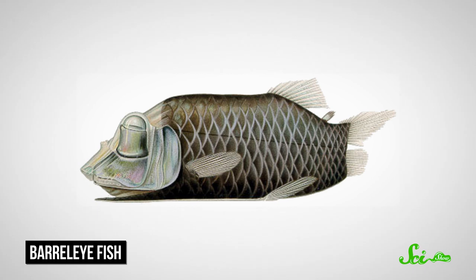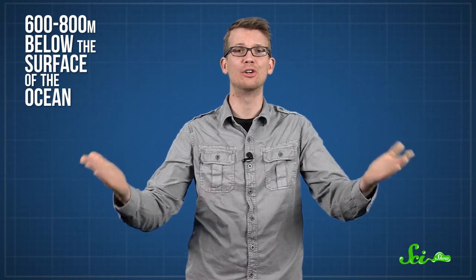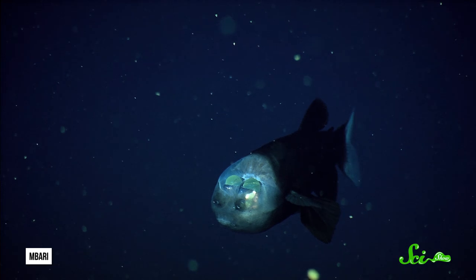Biologists don't actually know much about it, because like many deep-sea animals, the barrel-eye is hard to catch, and even harder to observe in its natural habitat, 600 to 800 meters below the surface of the ocean. But over the years, researchers have managed to learn a little more both from specimens that are hauled up to the surface in nets, and once from catching the thing on camera.